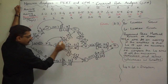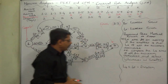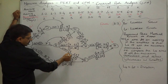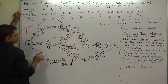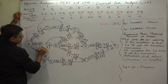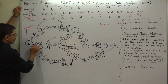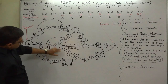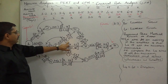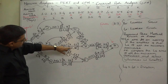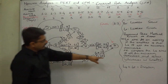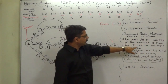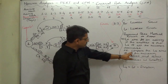The latest start times of the three successor activities of B are 7, 8, and 12. Compare them and select whichever is smallest - that is 7. So 7 becomes the latest finish time of B, and 7 minus 7 = 0 becomes the latest start time of B. The rule is: the latest finish time for an activity is the smallest of the latest start times of all its successor activities.